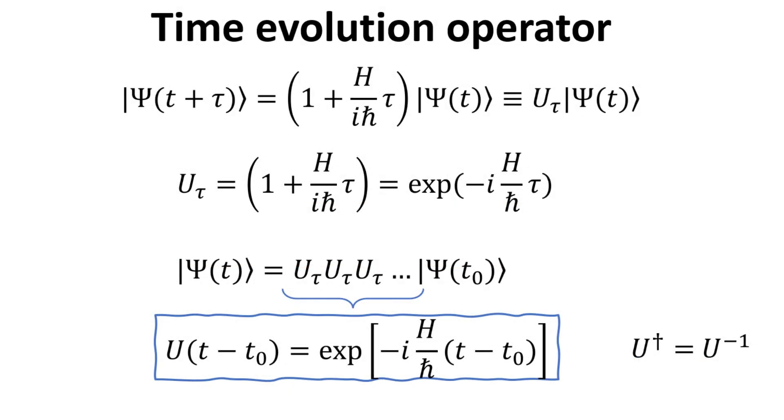Here, we rewrite the result we have obtained from the previous slide and denote the infinitesimal time evolution operator as U_τ. In the second line, we express U_τ in an exponential form, since one is the Taylor expansion of the other in the limit when τ is small. Finite time evolution can then be generated through sequential operation by U_τ. And the finite time evolution operator U is then given by the exponential exp[−iH(t−t₀)/ℏ]. The property of the unitary operator means that U† equals U⁻¹.